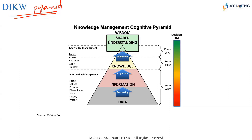The risk of taking a decision based on raw data is very high — shown in red. The risk when you take decisions based on wisdom is extremely low — you would be in the green zone. How we transition from data to wisdom is what determines the success of your projects.